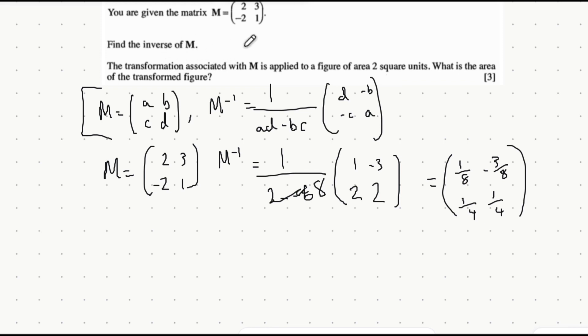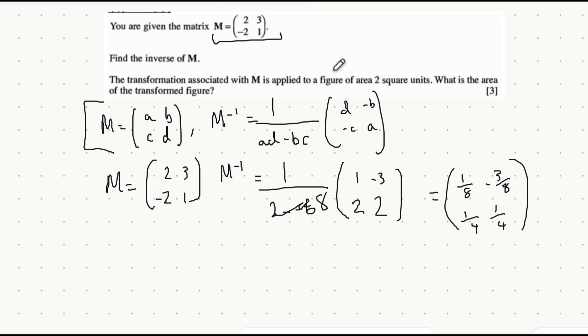It then tells us the transformation associated with this matrix is applied to a figure which has an area of 2 square units. What's the area of the transformed figure?